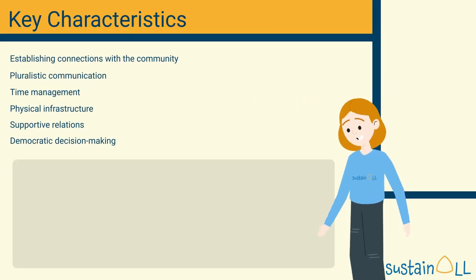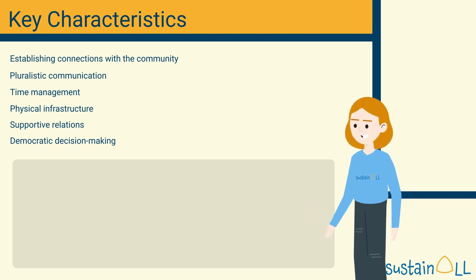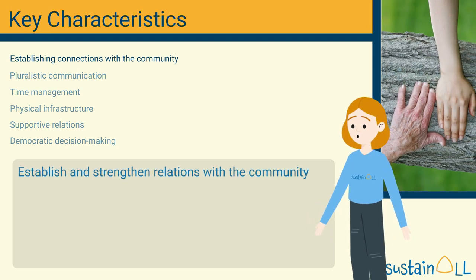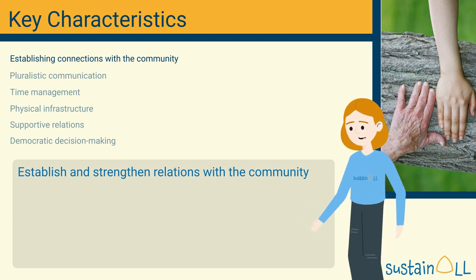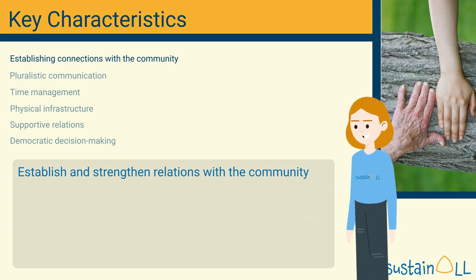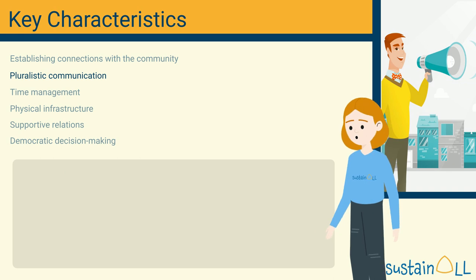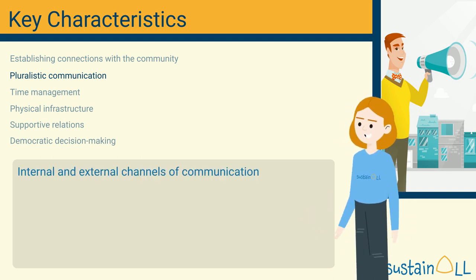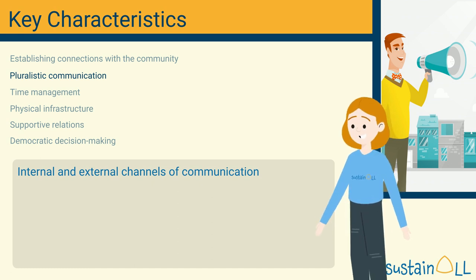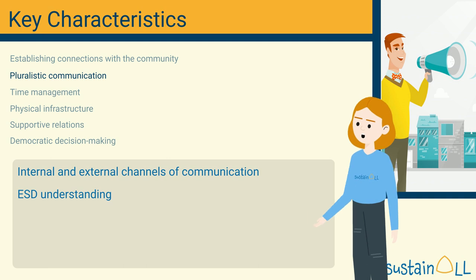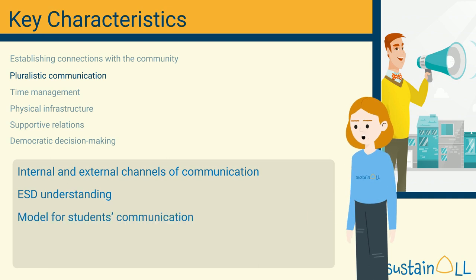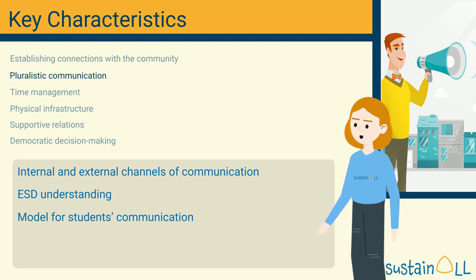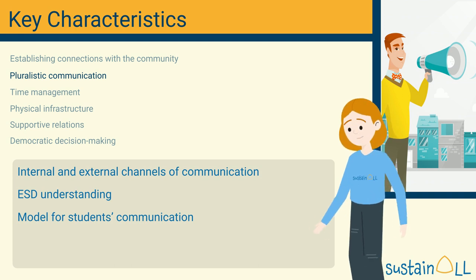The literature identifies schools' key characteristics associated with effective ESD implementation. To develop transdisciplinary learning, schools need to establish and strengthen relations with the community. It is important to provide spaces for dialogue and to open internal and external channels of communication. This facilitates the exchange of regular information about projects' goals and progress, and ESD understanding must be clearly communicated within the school and to external entities. It is also crucial to directly ask experts and stakeholders for their advice and support, and to invite them to presentations or exhibitions to follow the project's outputs.